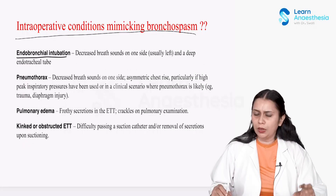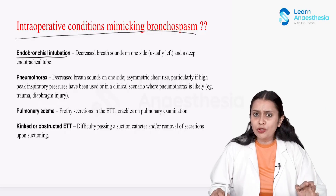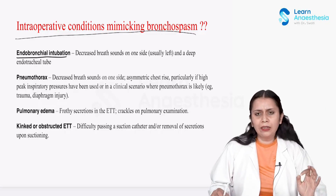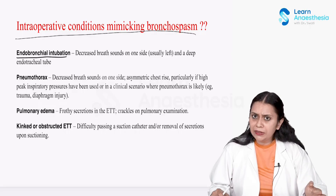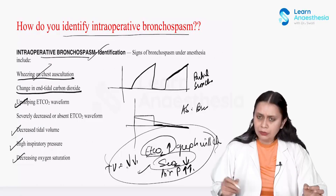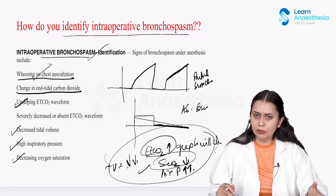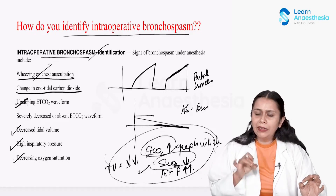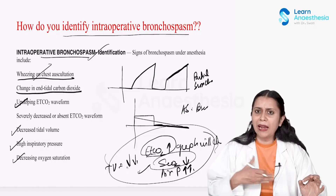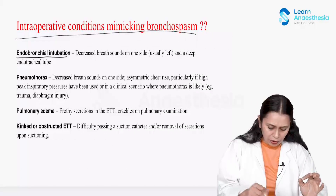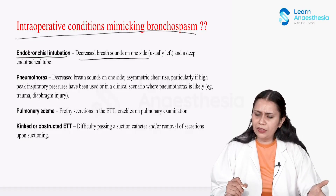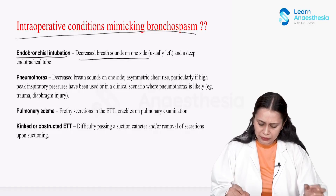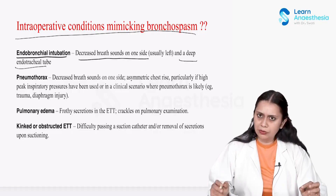In endobronchial intubation, when the tube goes into one bronchus, we get a shark-fin pattern on the EtCO2, decreased saturation, and increased airway pressure. On auscultation, bronchospasm gives bilateral decreased air entry and wheeze, whereas endobronchial intubation gives decreased breath sounds on one side — usually the left — because the tube mostly goes into the right side.